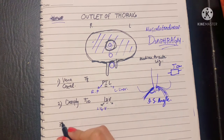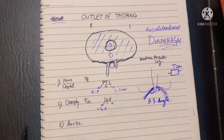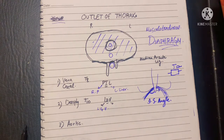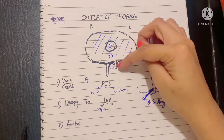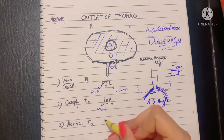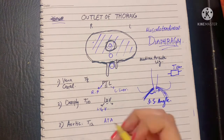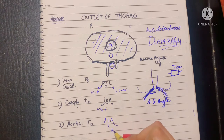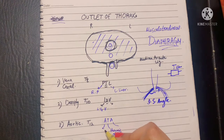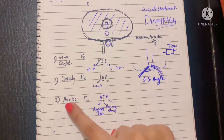Next, we have the aortic opening. The descending aorta also has to pass outside of the thorax, and it goes through the aortic opening, which lies behind the median arcuate ligament at the level of T12. The structures accompanying the aorta can be remembered with the mnemonic ATA: A for aorta, T for thoracic duct — a lymphatic system organ — and A for the azygos vein, the venous channel of the entire thorax. When there is contraction of the diaphragm, there is no change in this opening.